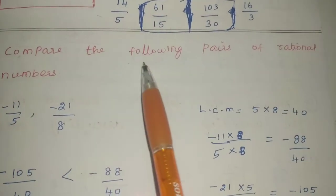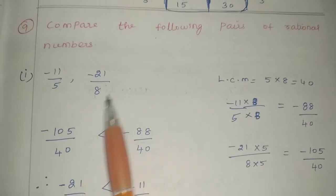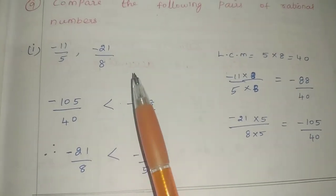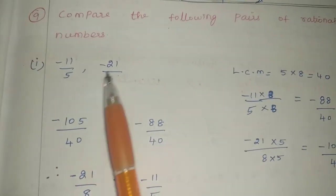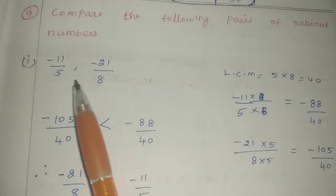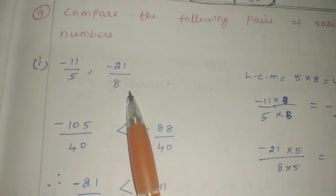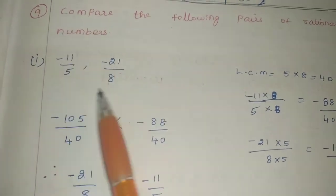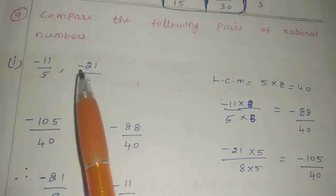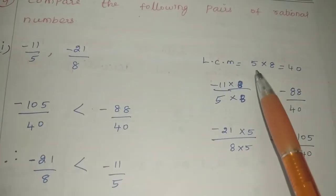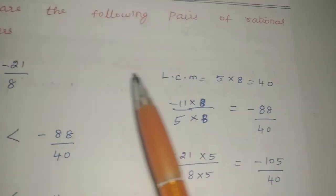Next is the 9th problem: Compare the following rational numbers and find which is greater. The numbers are minus 11 by 5 and minus 21 by 8. First, the denominators are different. We take the LCM of 5 and 8. Since they are from different tables, we multiply: 5 into 8 is 40. So LCM is 40.